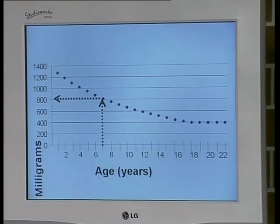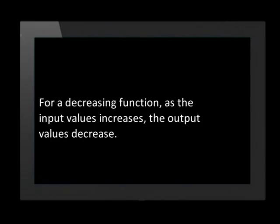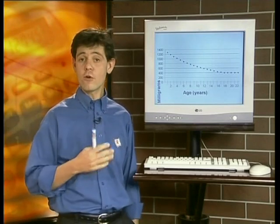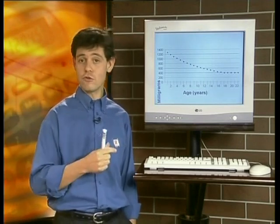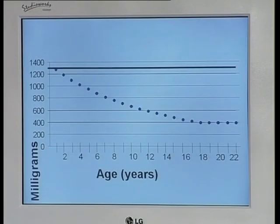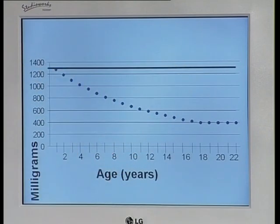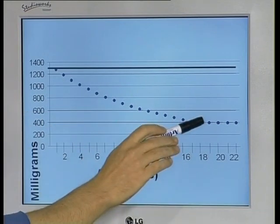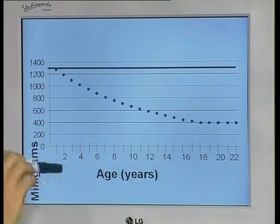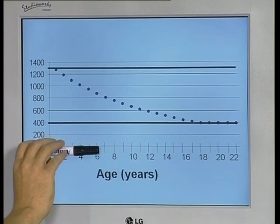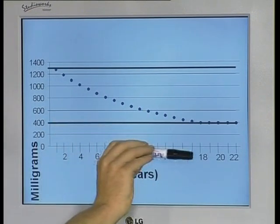You need to learn the following. For a decreasing function, as the input values increase, the output values decrease. A value that does not change is constant. The graph shows that for one-year-old babies, the dosage is 1,300 milligrams. We say that 1,300 milligrams is the maximum output value. From the age of 18, however, the requirement is constantly 400 milligrams. In other words, the dosage is never less than 400 milligrams, and so we say that this represents the minimum output value.